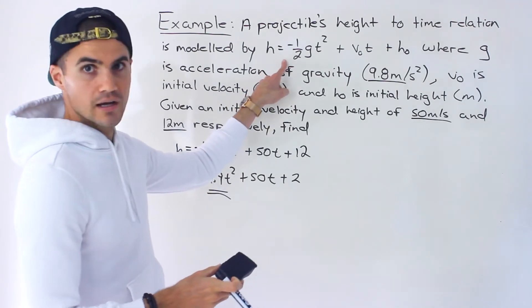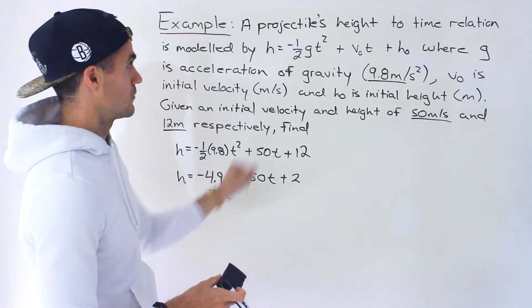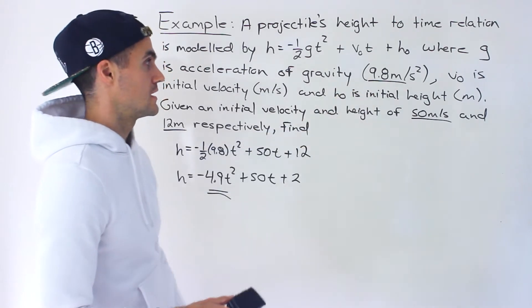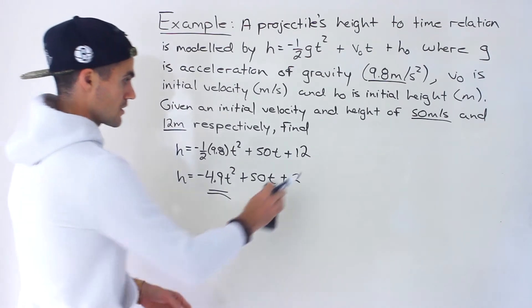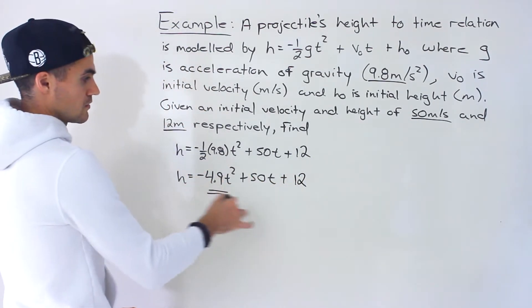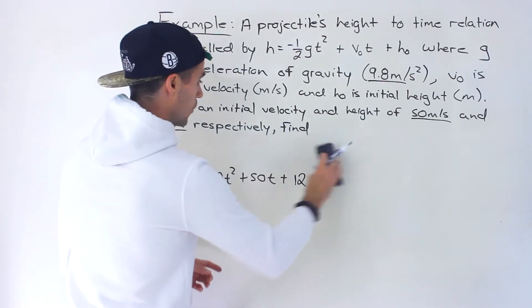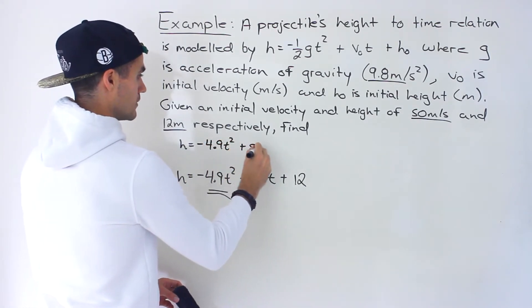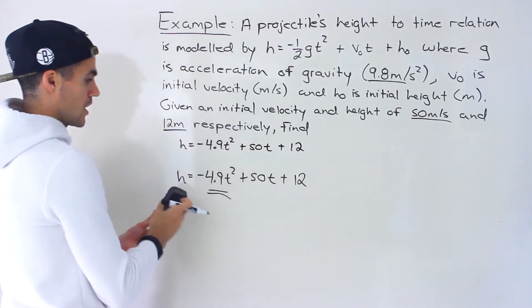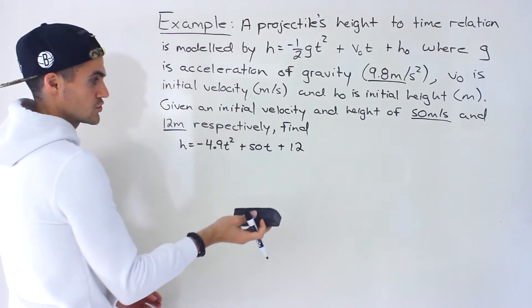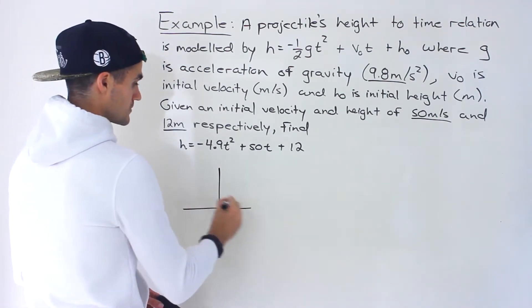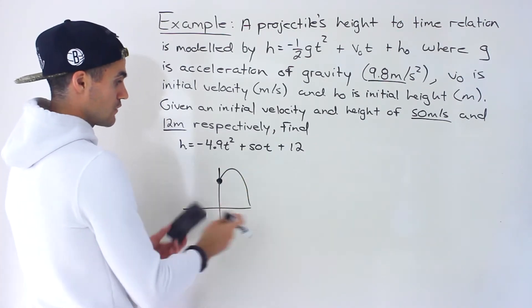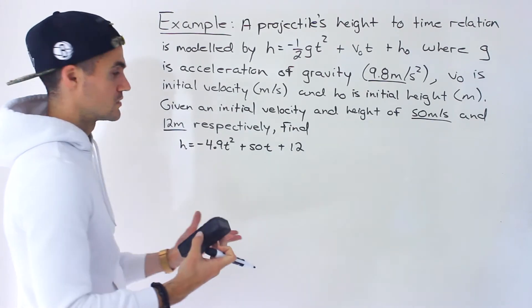This formula comes from physics. We're taking negative one over two and multiplying it by the acceleration due to gravity, which on Earth is 9.8 meters per second squared. So this quadratic — h equals negative 4.9t squared plus 50t plus 12 — models a projectile launched from an initial height of 12 meters with an initial velocity of 50 meters per second. It could be a ball thrown up or a firework launched from an initial height.